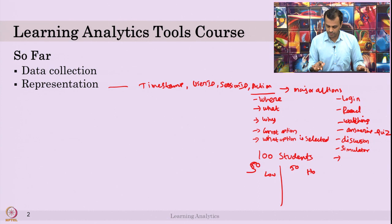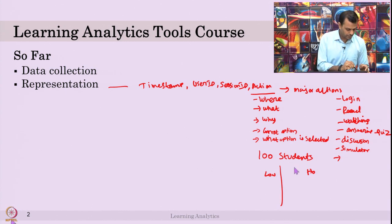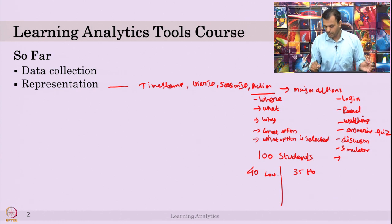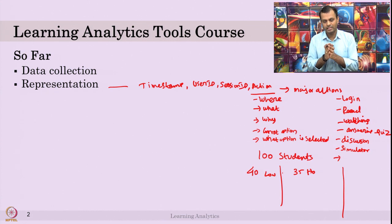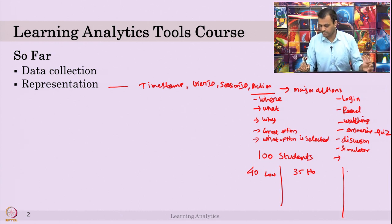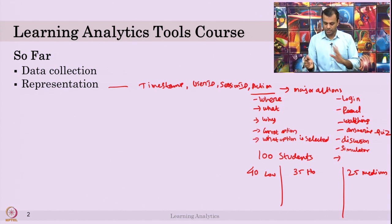Instead of a strict 50-50 split, you might have around 40 low performers and 35 high performers, with some in between — neither low nor high. We do not want to classify everyone just below 50 as low or 51 as high, that makes no sense. We can give a median value or some gap, considering middle performance, or set a buffer — say, less than 30 is low and above 70 is high — you make your own bifurcation.